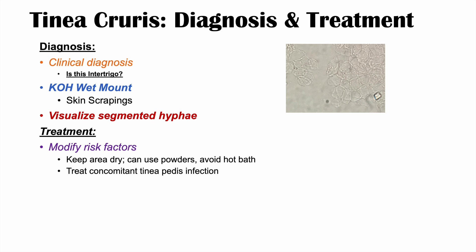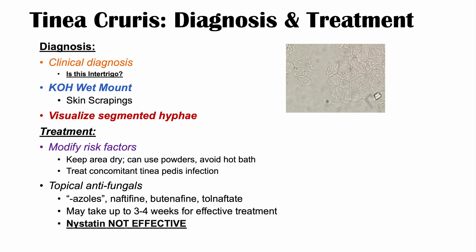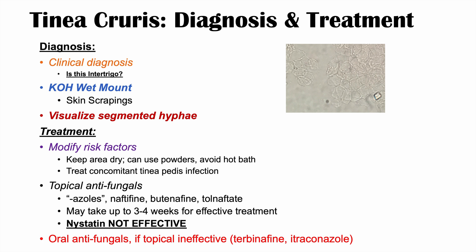Tinea cruris is treated using topical antifungals as a first line — and importantly, intertrigo is also treated with topical antifungals, so even if you're unsure of the diagnosis, topical antifungals will treat both. The topical options are the azoles, naftifine, butenafine, and tolnaftate. Treatment may take up to three to four weeks. Notably, nystatin is not effective, as it does not treat dermatophyte infections. If topicals fail, oral antifungals such as terbinafine and itraconazole can be used.